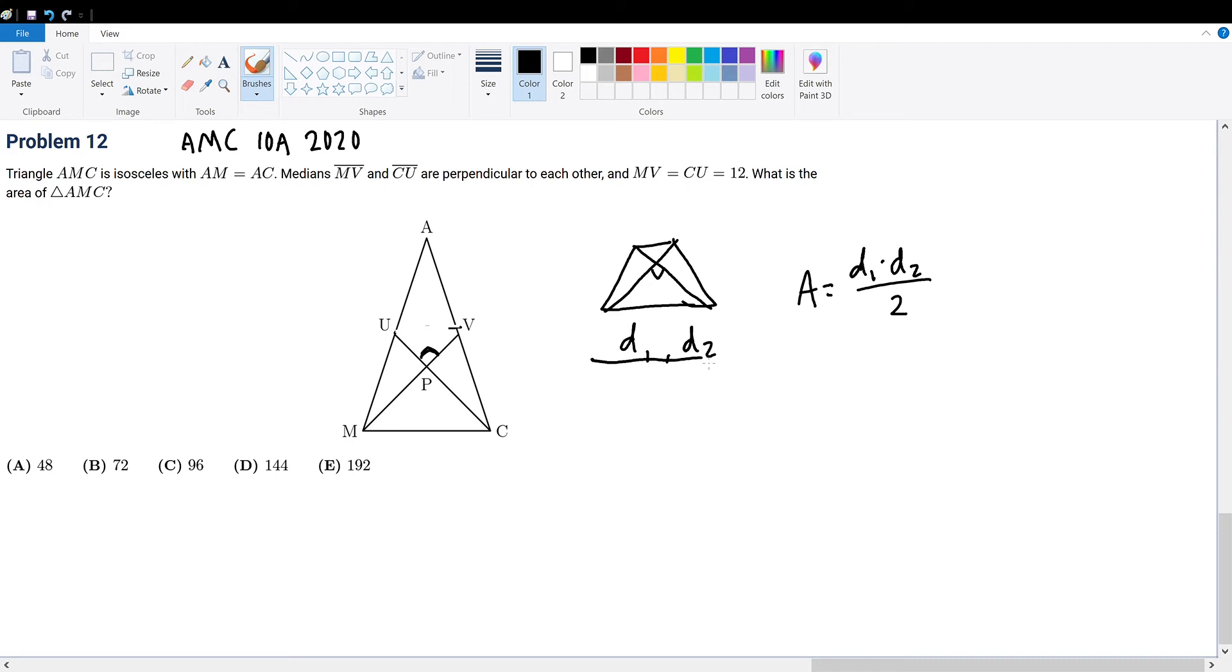From this we can draw segment UV to construct this trapezoid. When we're dealing with an area that we cannot directly solve from its given area formula, we can divide it into smaller shapes that'll be easier to solve.